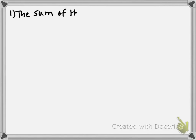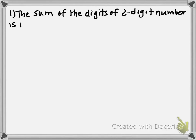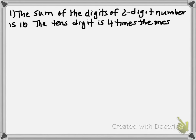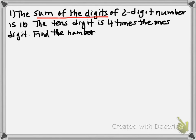First problem: the sum of the digits of a two-digit number is 10, and the tens digit is four times the ones digit. Find the number. The phrase 'sum of the digits' tells us to take the tens digit and the units digit and add them together, so that's T plus U equals 10.